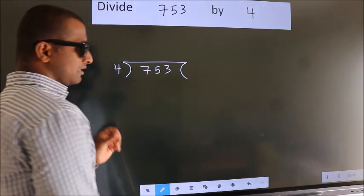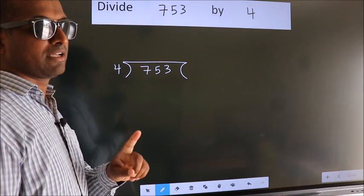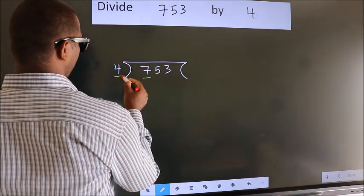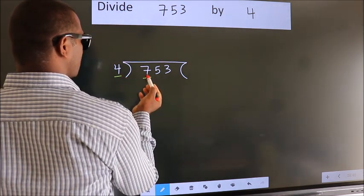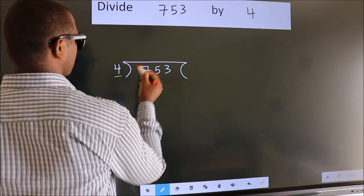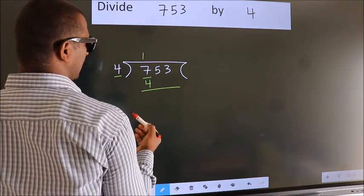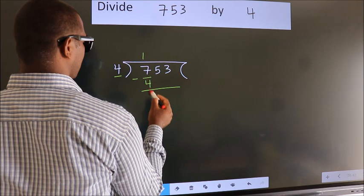This is your step 1. Next. Here we have 7, here 4. A number close to 7 in 4 table is 4 once 4. Now we should subtract. We get 3.